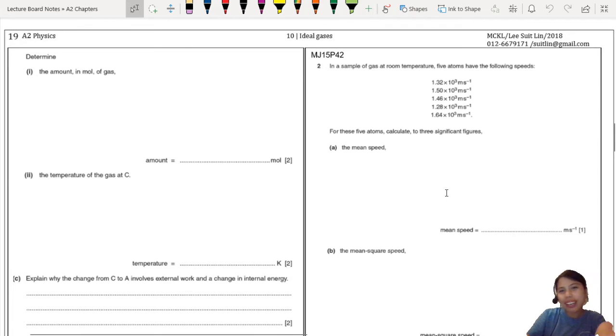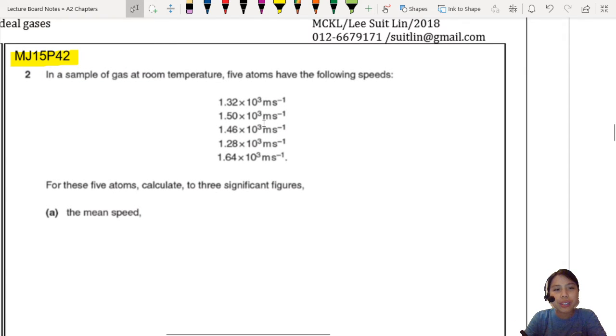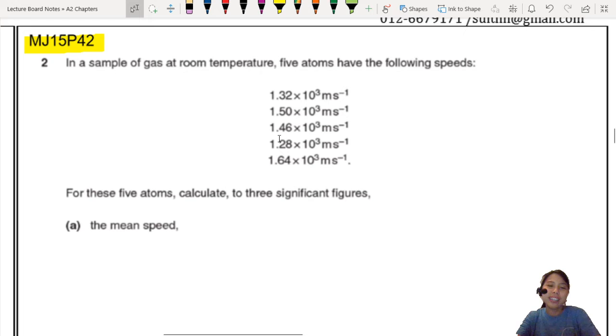This past year question is kind of like statistics, very interesting. So MJ15P42 on the right side over here. Let us take a look. They give you, in a sample of gas at room temperature, why 5 atoms?